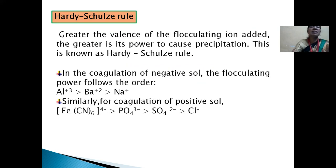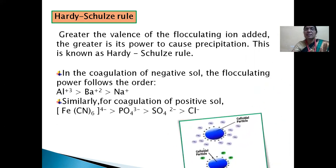Next is the Hardy-Schulze rule: greater the valence of the flocculating ions added, the greater is its power to cause precipitation. In the coagulation of a negative sol, the flocculating power follows the order: Al³⁺ > Ba²⁺ > Na⁺. Similarly for coagulation of a positive sol: Fe(CN)₆⁴⁻ > PO₄³⁻ > SO₄²⁻ > Cl⁻.